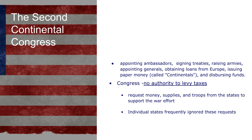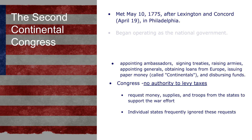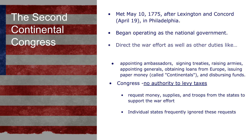The Second Continental Congress started meeting after Lexington and Concord happened, and they begin operating as the national government. They direct the war effort as well as other duties. The Second Continental Congress has people elected from each colony — they're going to start referring to themselves as states soon, but not quite yet. They are the acting government for the war effort and for the colonies, although each individual colony still has its own government as well.